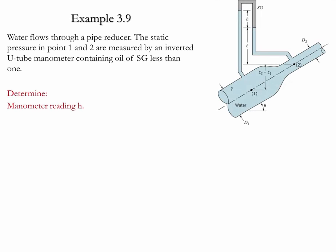Example 3.9. In this example we have water flowing through a pipe reducer. The static pressure at points 1 and 2 can be measured by inverting a U-tube manometer containing an oil of specific gravity less than one. The goal of the problem is to determine the reading of that manometer.